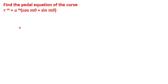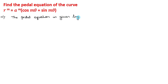In this video, we learn about how to convert a parametric polar equation into a pedal equation. The problem is: find the pedal equation of the curve R^M = A^M (cos Mθ + sin Mθ). The pedal equation is given by the formula P = R sin φ, where φ is the angle between the radius vector and the tangent to the curve, and tan φ = R dθ/dR.